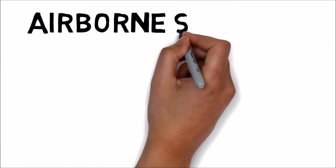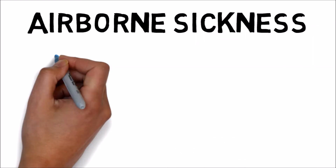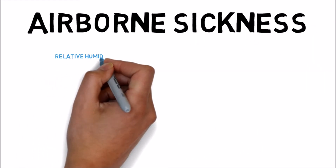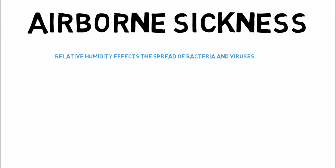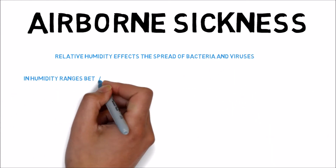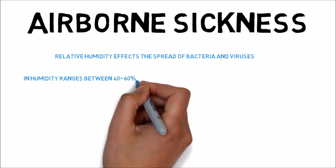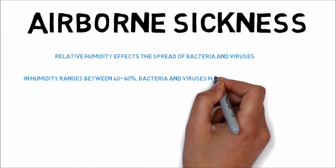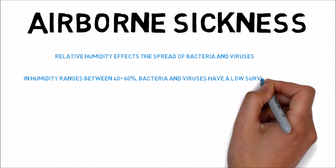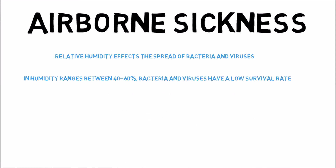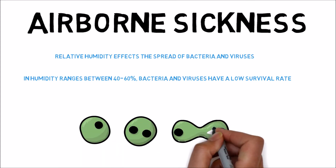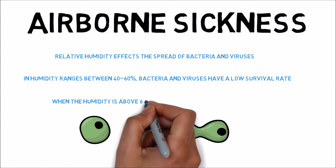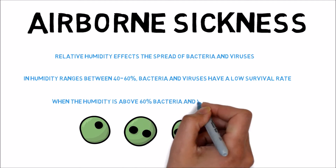One of the harmful effects of high humidity is the increased spreading of airborne sickness throughout your home. This is due to the fact that higher humidity leads to a higher survival rate of bacteria and viruses. When you keep your home in the ideal humidity range of 40 to 60 percent, you can actually weaken the cells of bacteria and viruses, making it less likely for them to survive in your home.